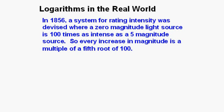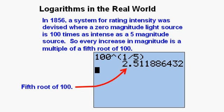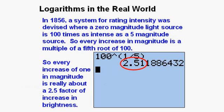So every increase in magnitude is a multiple of a fifth root of 100, and a fifth root of 100 is approximately 2.51. So every increase of one in magnitude is really about a 2.51 factor of increase in brightness.